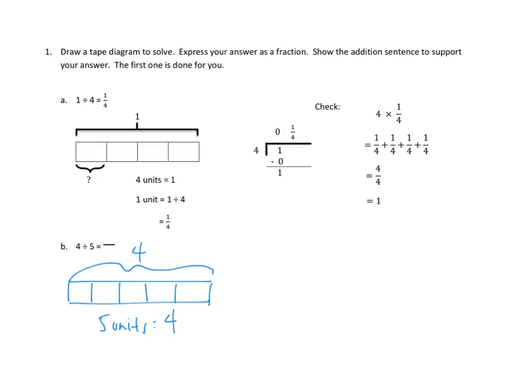And that means, so 1 unit equals 4 divided by 5. 4 divided by 5 is the same as 4 fifths, and I think that's our answer here, 4 divided by 5.